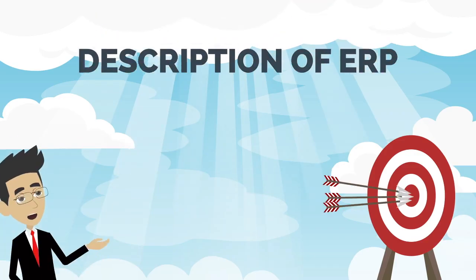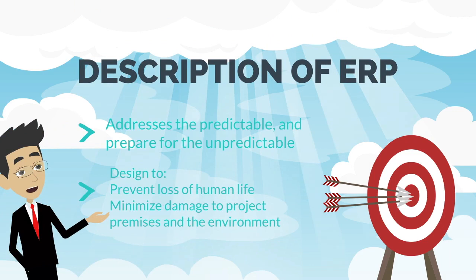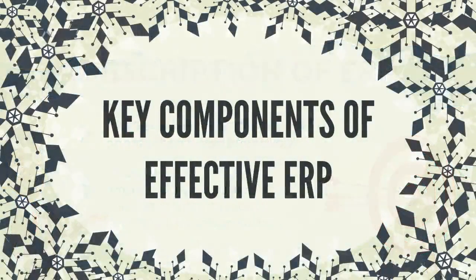An emergency response plan addresses the predictable and prepares for the unpredictable incident. It is designed to prevent loss of human life and minimize damage to project premises and the environment. What are the key components of an effective emergency response plan?